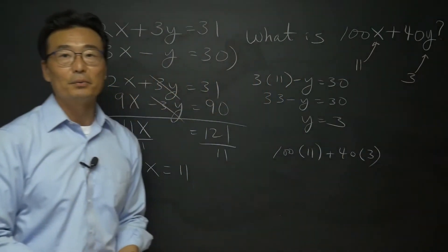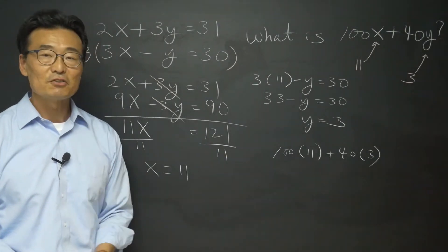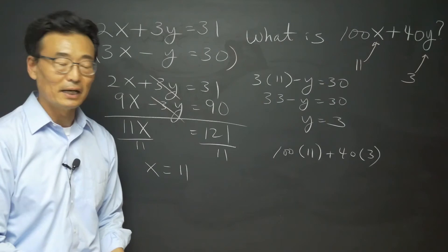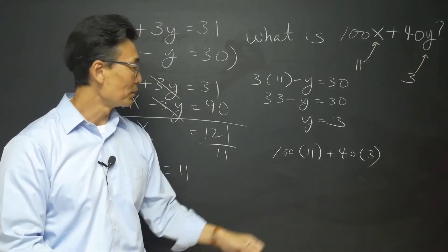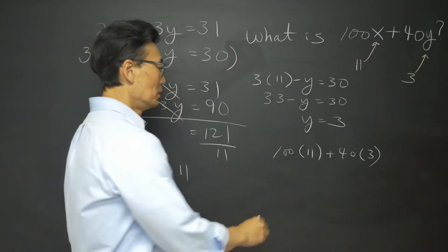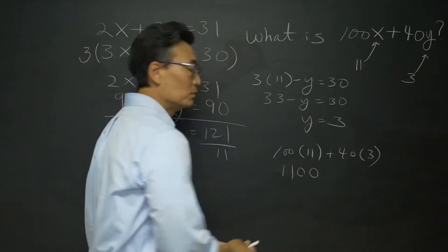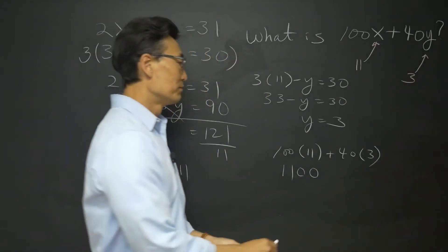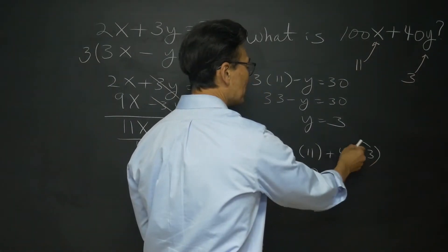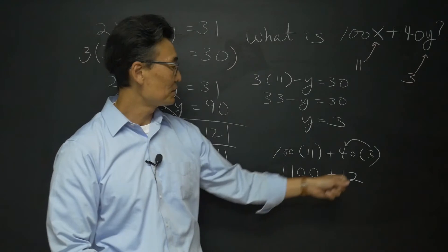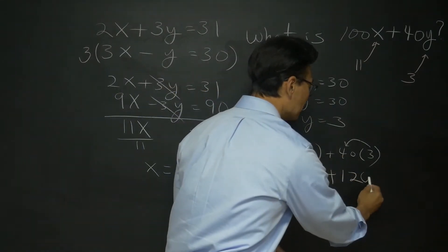All right, let's do it down here. So we get 100 times 11 plus 40 times 3. By the way, this was on a no calculator section, meaning section 3 of the SAT math, so we're going to have to do this without a calculator. 100 times by 11, all you're going to do is write down the 11 and add the two zeros. 40 times 3, take the 3, multiply to the 4, giving you a 12, and just tack on the zero after like so.